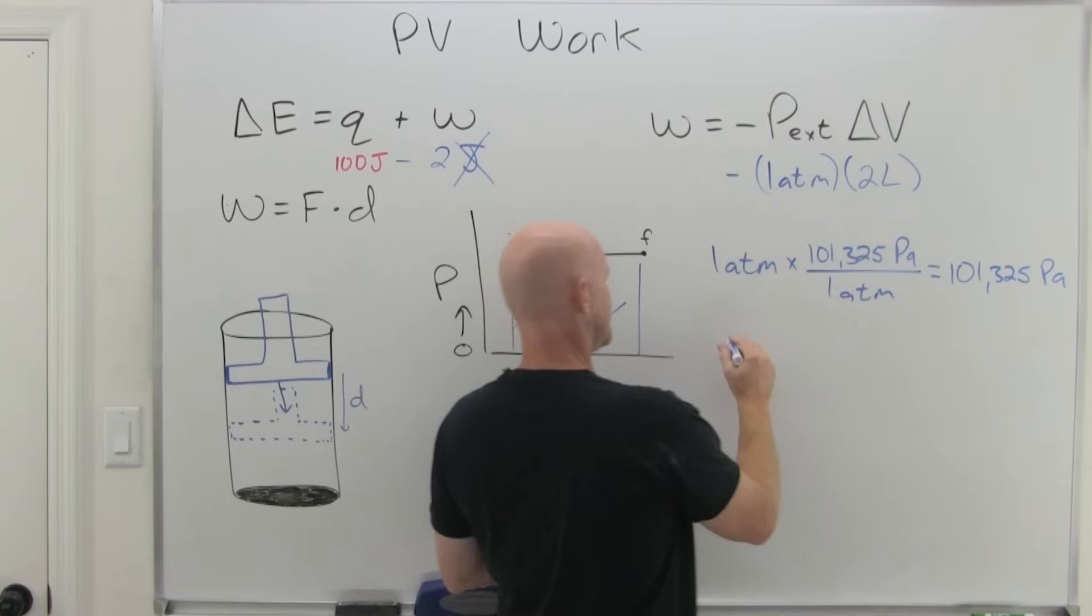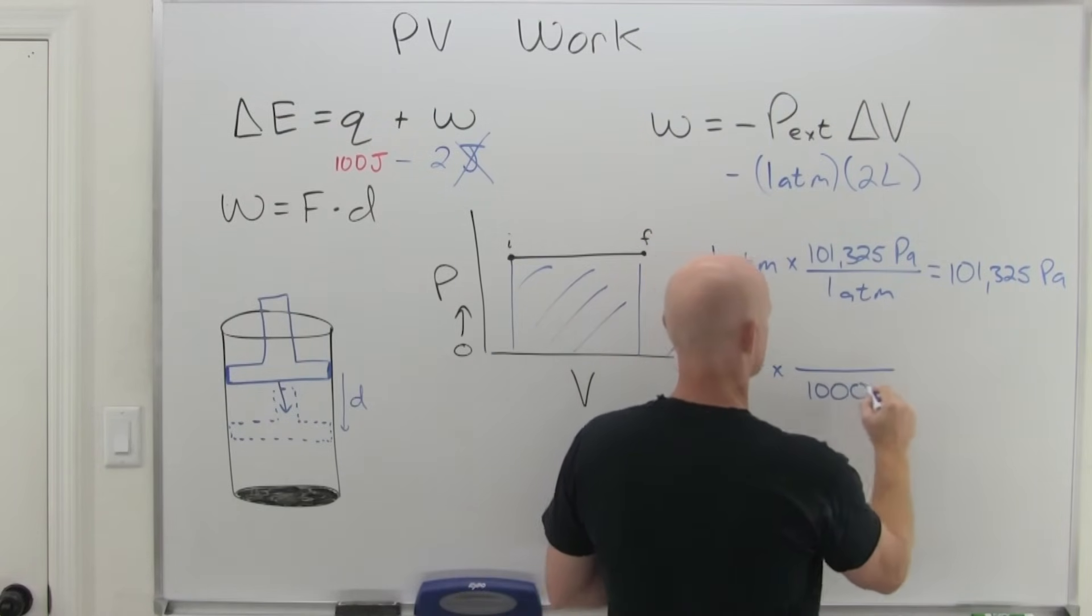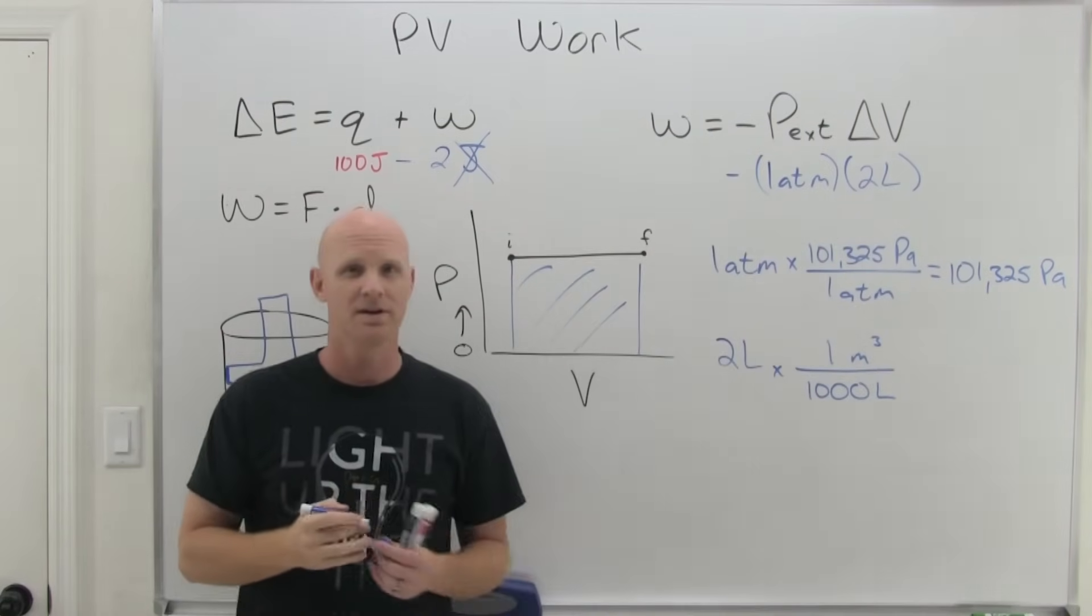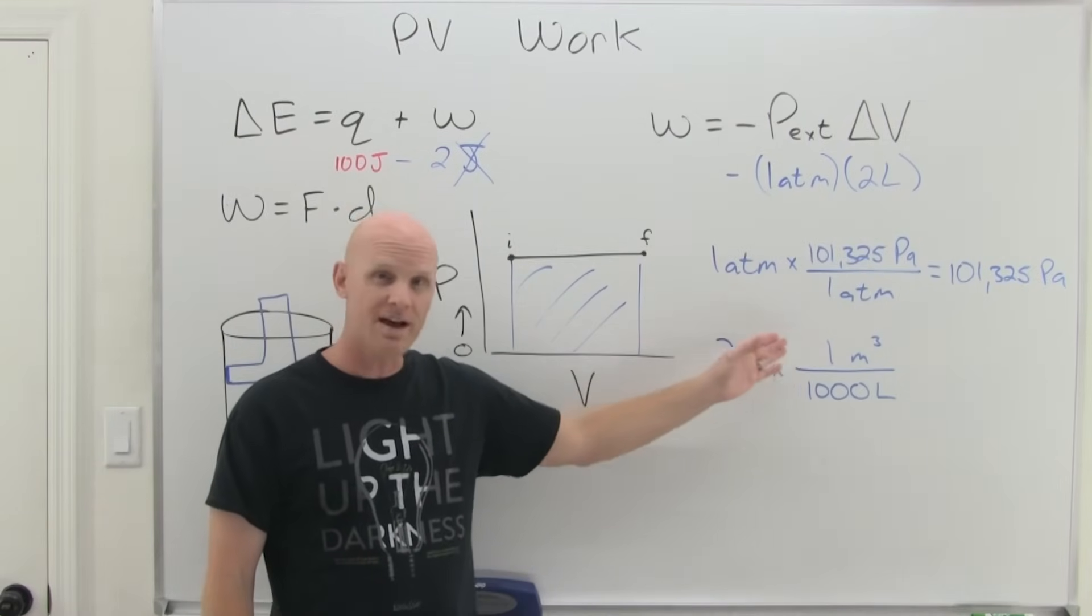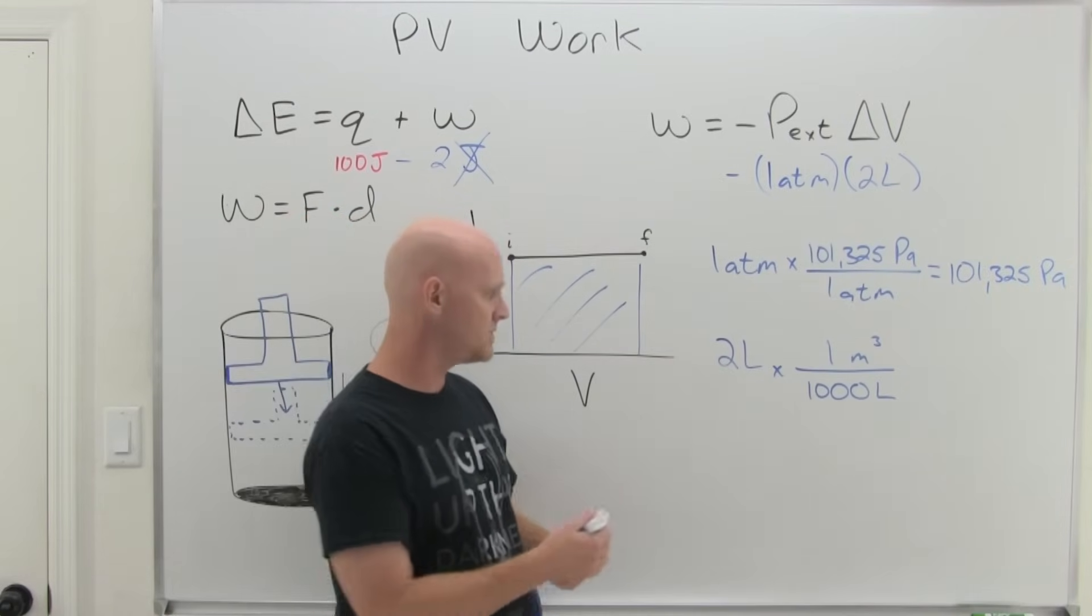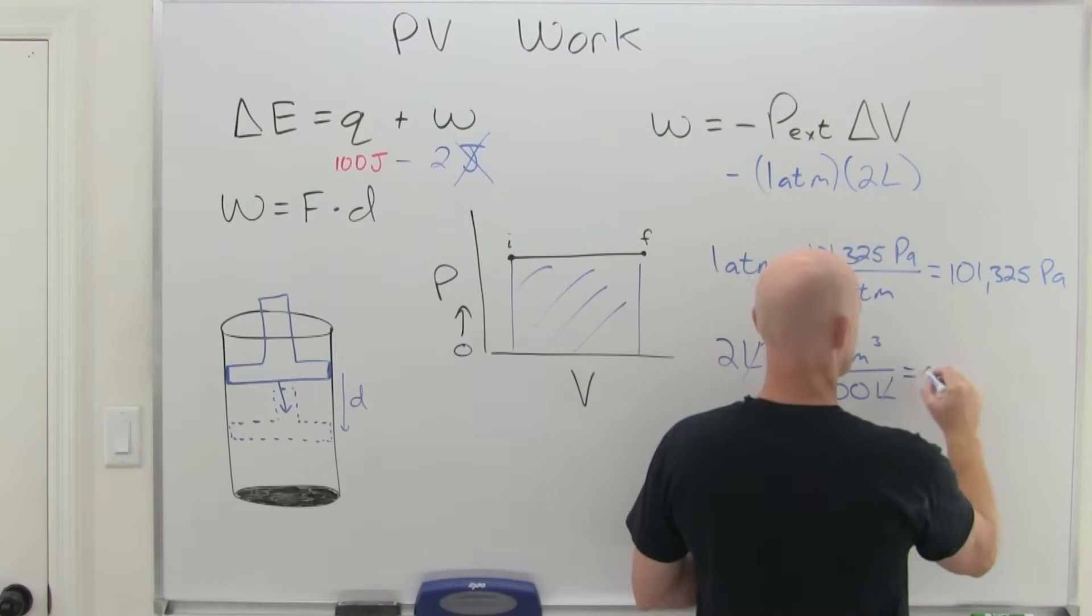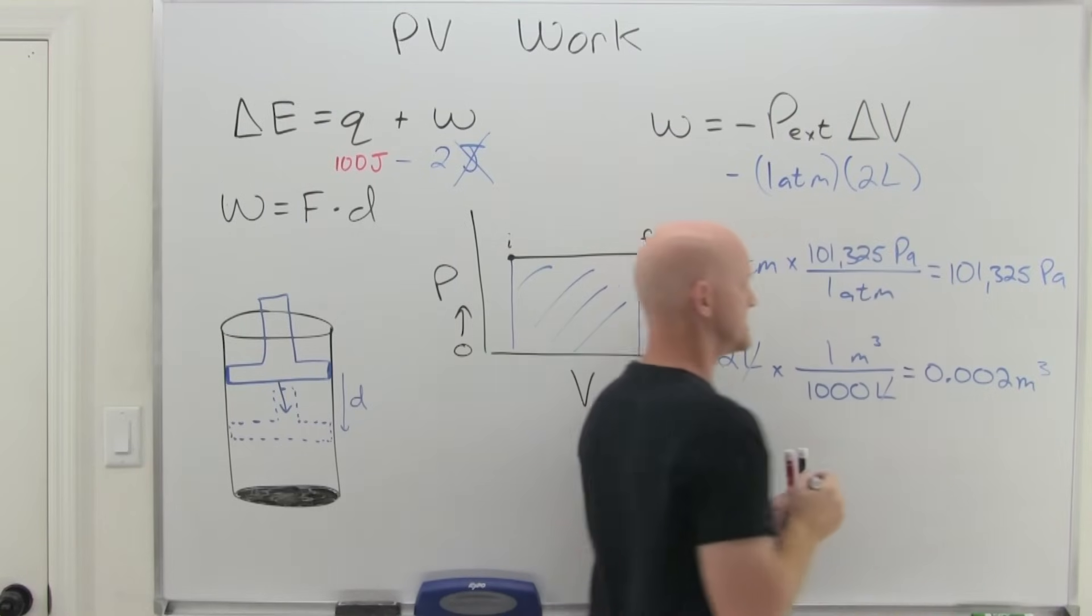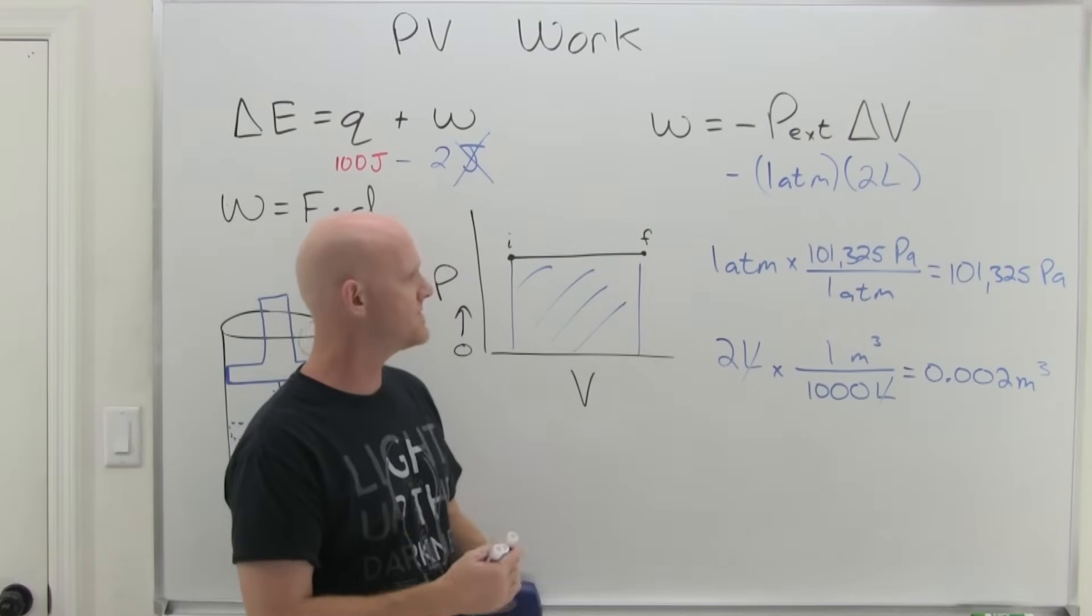And one times 101,325 is 101,325 Pascals. So in this case, because it was one atmosphere, we just have the conversion. So that gets us to Pascals. And then for liters, we've got two liters and it turns out there are 1,000 liters in one meter cubed. This is oftentimes something you could look up in a table or something you might be provided. But 1,000 liters is equal to one meter cubed. And so in this case, we'll find that two divided by 1,000 is 0.002 meters cubed.